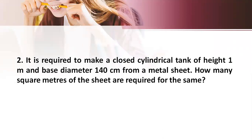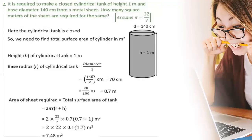Now let us go to the second problem. It is required to make a closed cylindrical tank of height 1 meter and base diameter 140 cm from a metal sheet. How many square meters of sheet are required? So here in the second problem we need to make a closed cylindrical tank of height 1 meter and base diameter 140 cm. We need to calculate how much sheet is required, so we need to find the total surface area in meter square.